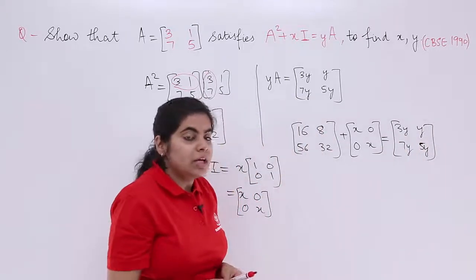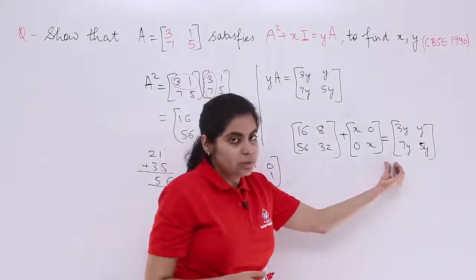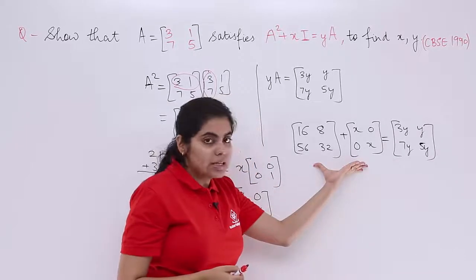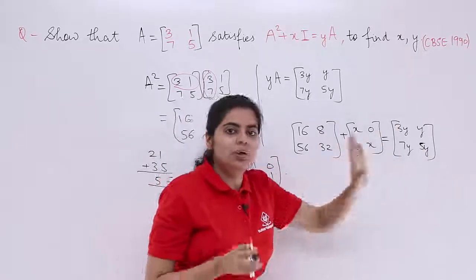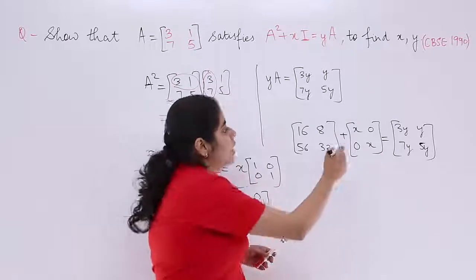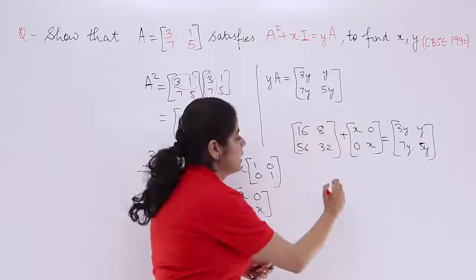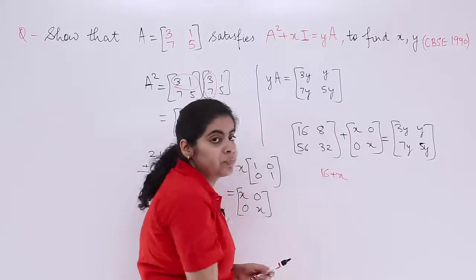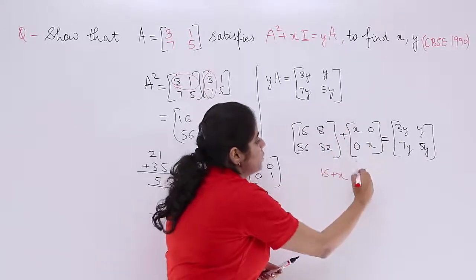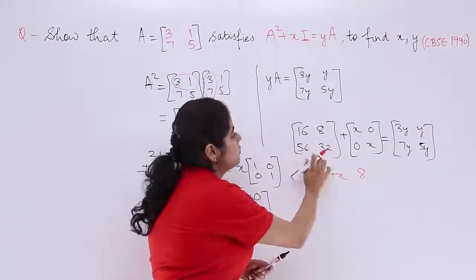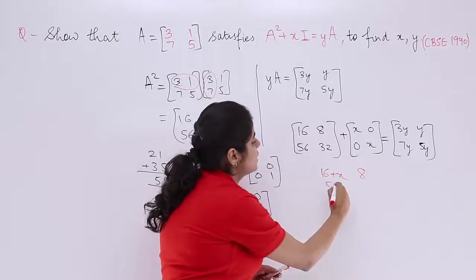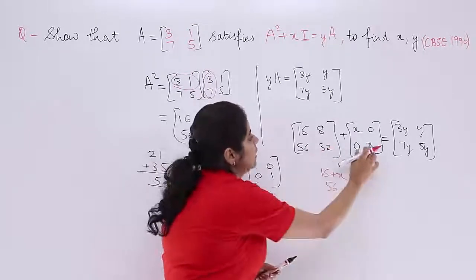Now, you know that here it is equal to sign. That means whatever is on left hand side is equal to that on right hand side. And here it is plus sign. So let's add things. 16 plus X, 16 plus X. Next is 8 plus 0 which is 8. Next is 56 plus 0 which is 56. Last but not the least, 32 plus X.